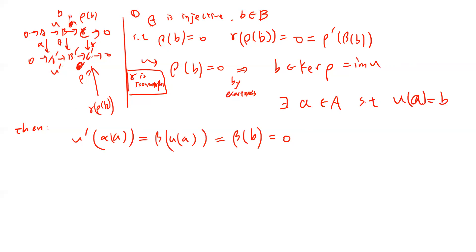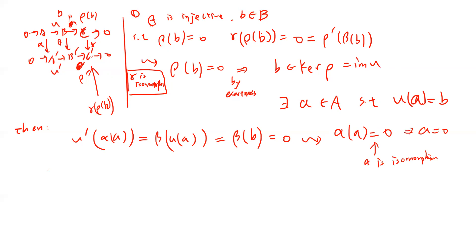So μ'(α(a)) = 0. Since the bottom sequence is short exact, μ' is injective, so α(a) = 0. But α is an isomorphism, so a = 0. Since a = 0 and μ(a) = b, we get b = 0. This tells us that β is injective.